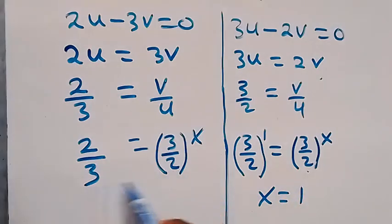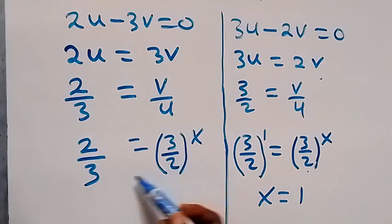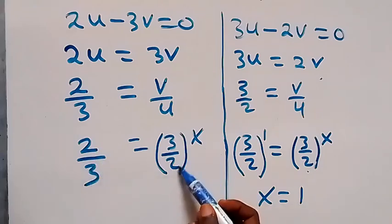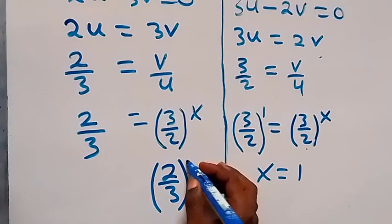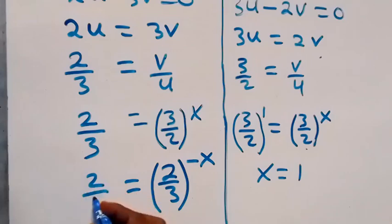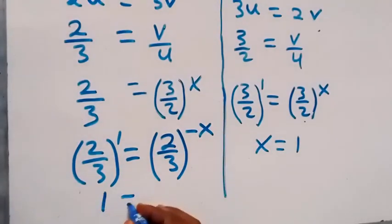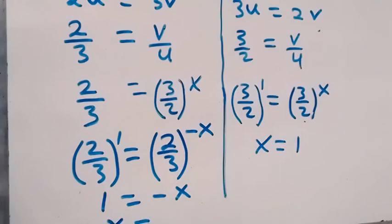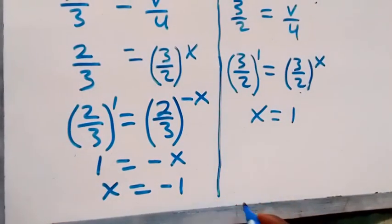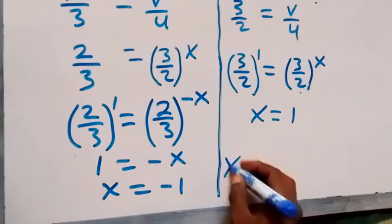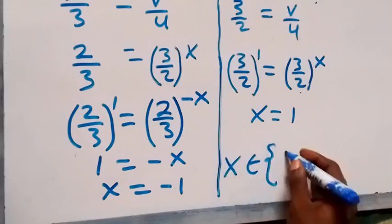Confirming: on the second side, flipping the ratio introduces a negative power, giving (2 over 3) to the negative x equals (2 over 3) to the power 1. So negative x equals 1, and multiplying through by negative one gives x equals negative 1. Therefore the values of x are negative 1 and 1, and we can say x is a member of the set {-1, 1}.